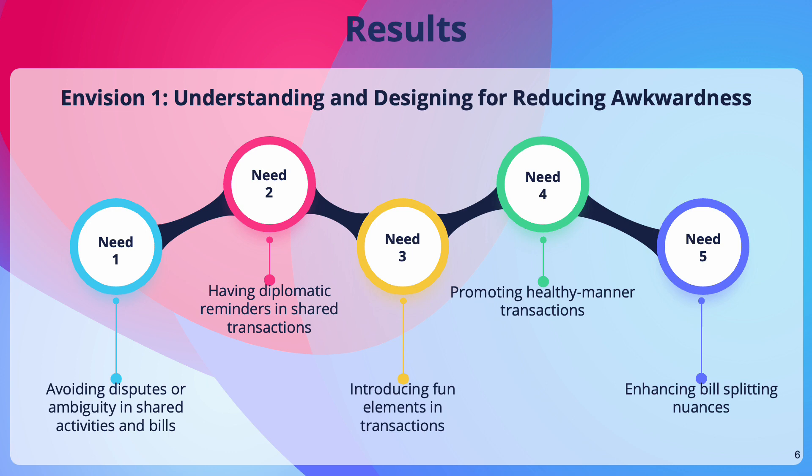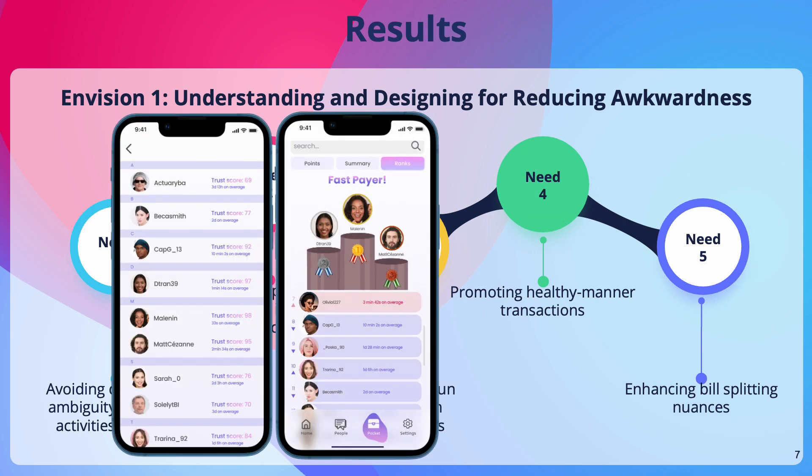First, our study revealed five user needs aimed at minimizing awkwardness. For example, an app-wide trust ranking was proposed to demonstrate users' reliability in making transactions. We hope to minimize discomfort in personal transactions by motivating users to uphold their financial reputation within their social circles.